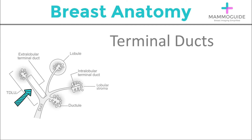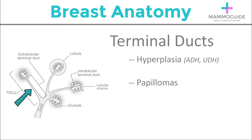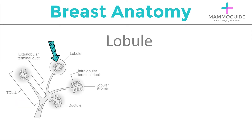The terminal ducts are where most of the action occurs. Hyperplasia, or overgrowth of normal cells, can occur — this is usual ductal hyperplasia. If these cells are abnormal, it's called atypical ductal hyperplasia. Papillomas can occur in the smaller terminal duct. Ductal carcinoma can be ductal carcinoma in situ if it's all confined within the duct, or if it breaks free from the myoepithelial layer of the terminal duct, it is referred to as invasive ductal carcinoma.